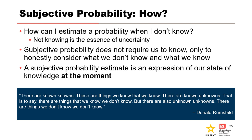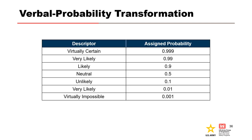How can one estimate a probability when not knowing? Not knowing is the essence of uncertainty. Subjective probability does not require us to know — only to honestly consider what we don't know and what we know. A subjective probability estimate is an expression of our state of knowledge at the moment, and whenever new information becomes available, our probability estimates may need to change. A verbal mapping scheme assists with making subjective probability estimates, based primarily on experiments by Reagan et al. (1989), which show that people are relatively well calibrated and consistent relative to known probabilities, provided they use words that most people would adopt on their own.